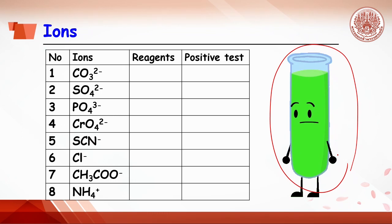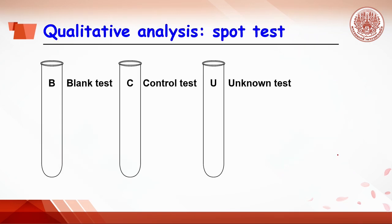The principle of each ion will have its own reagent and get a positive test. To see the positive test, you need to have three test tubes for testing each ion.